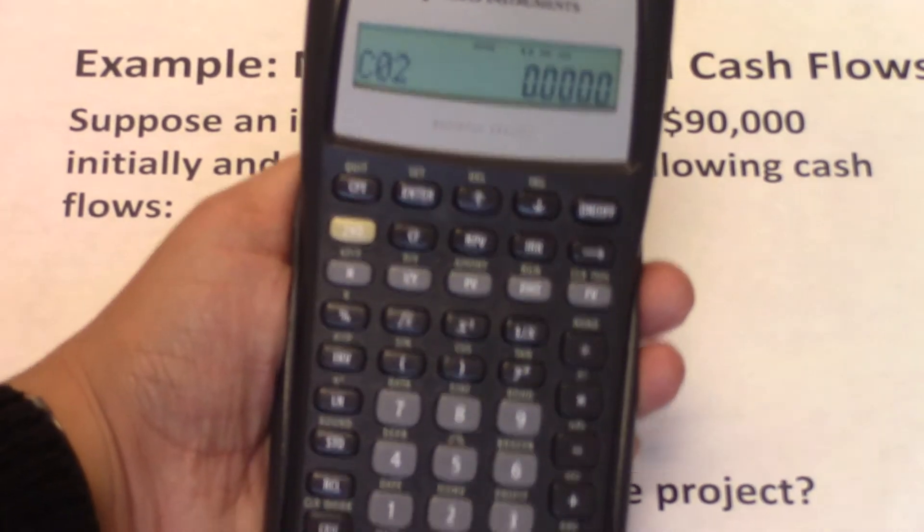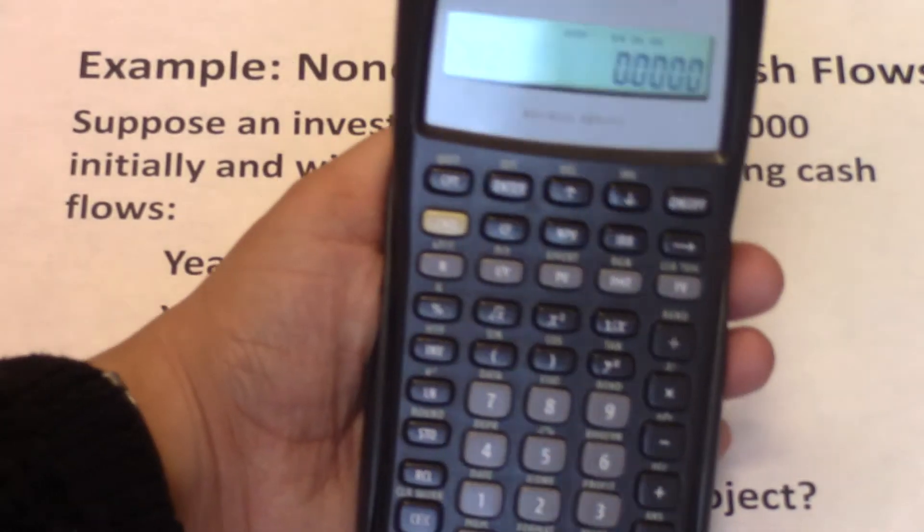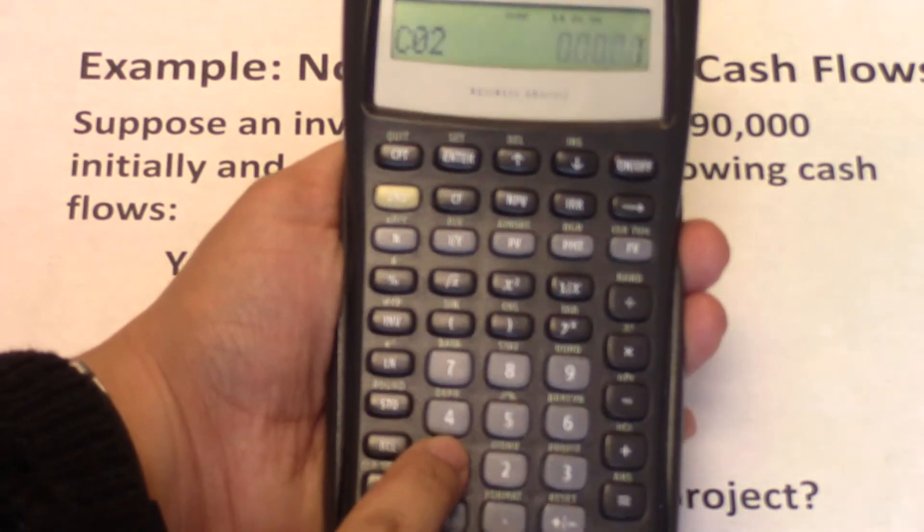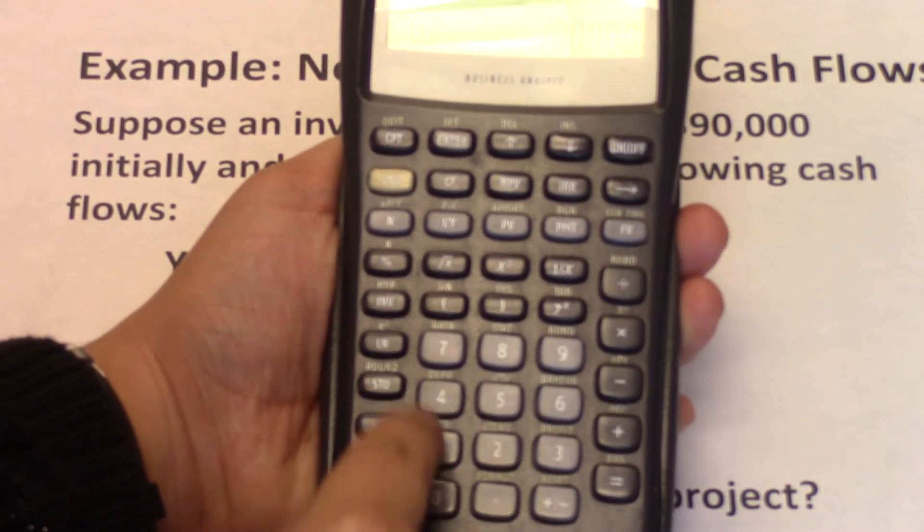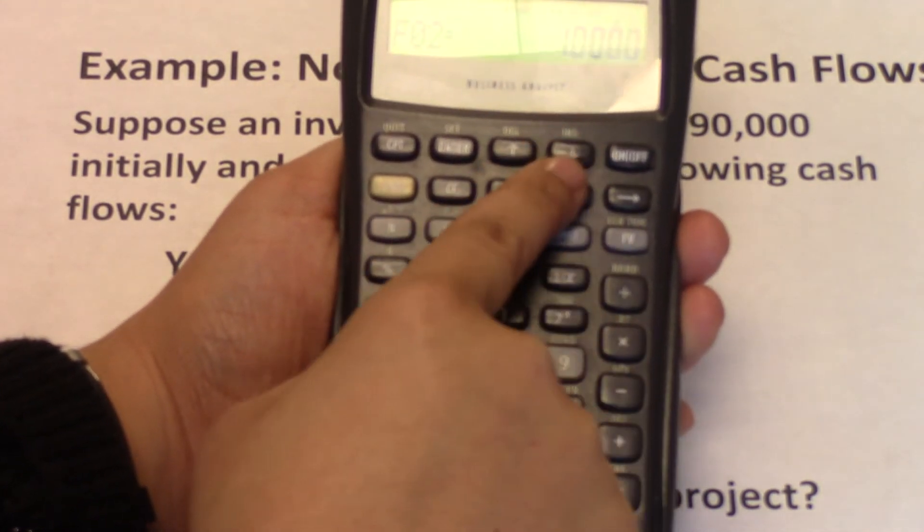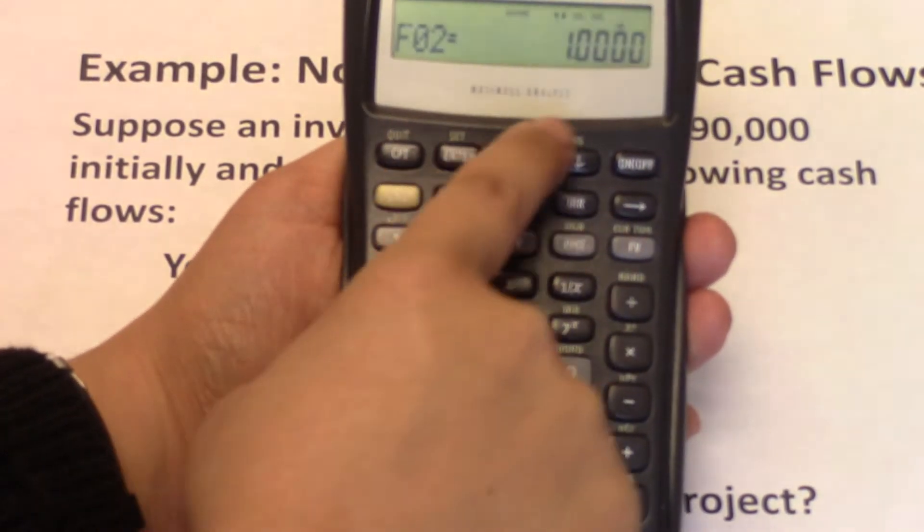And then you're asked for cash flow year two. Cash flow year two is $100,000. So again, we input $100,000. Enter, down arrow. Frequency is one. So we keep it as that.